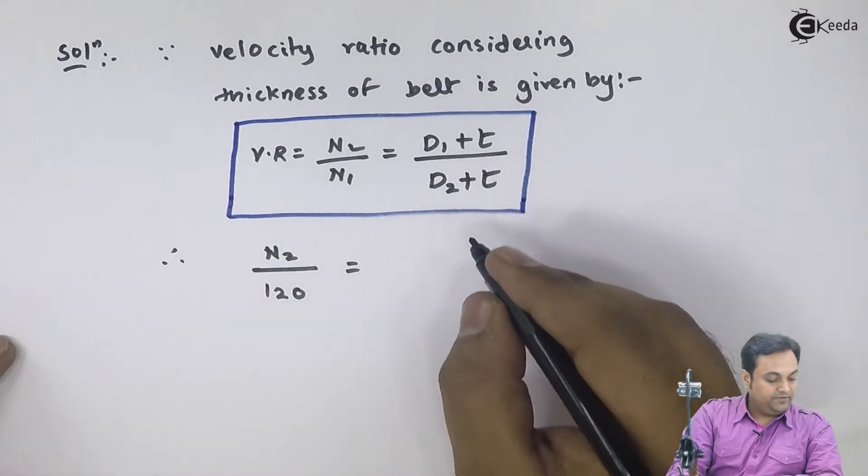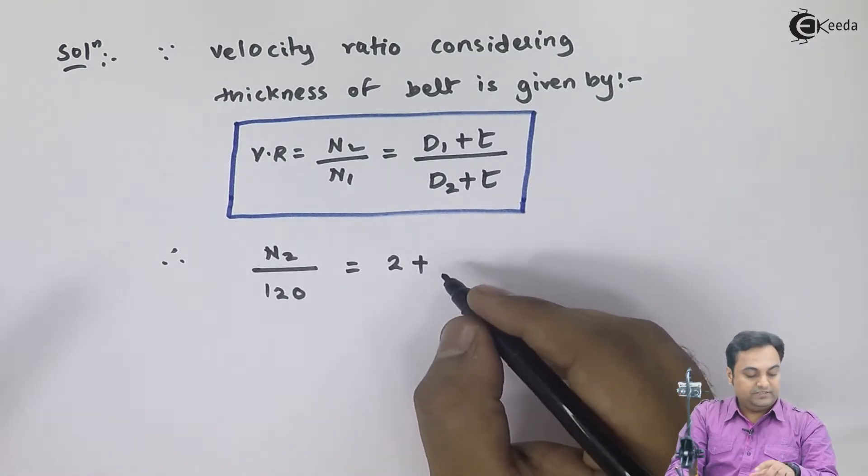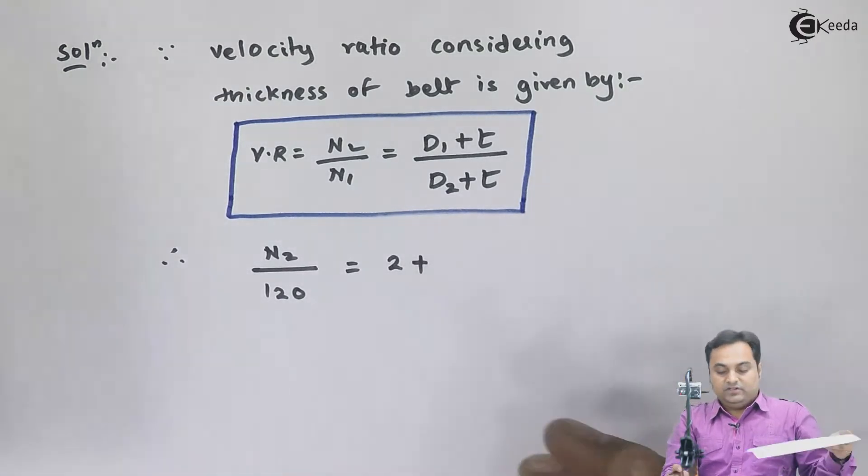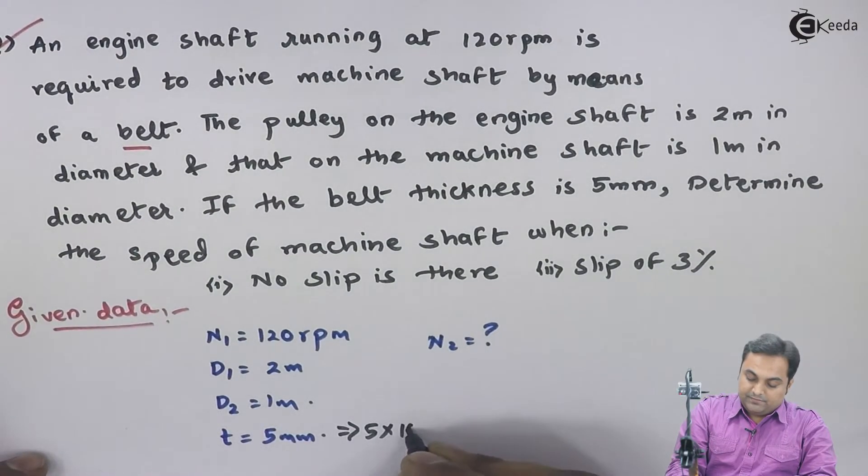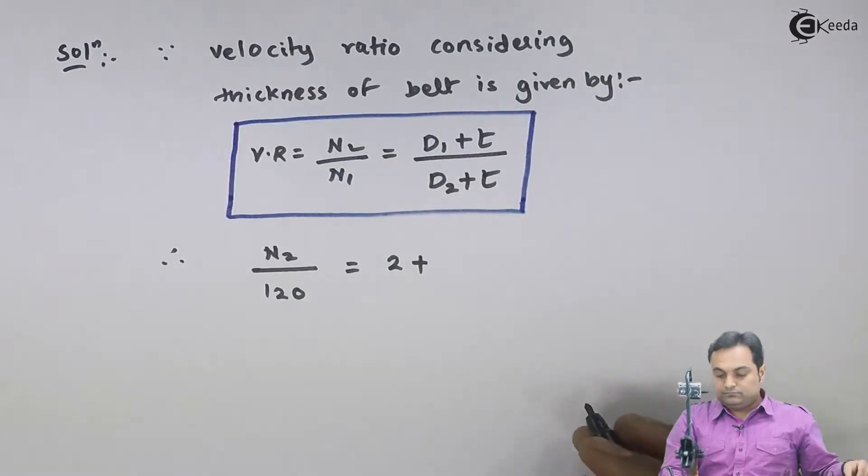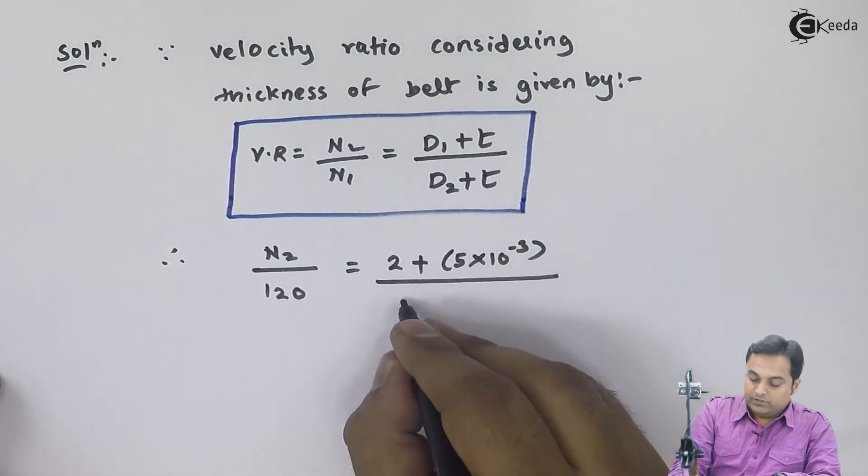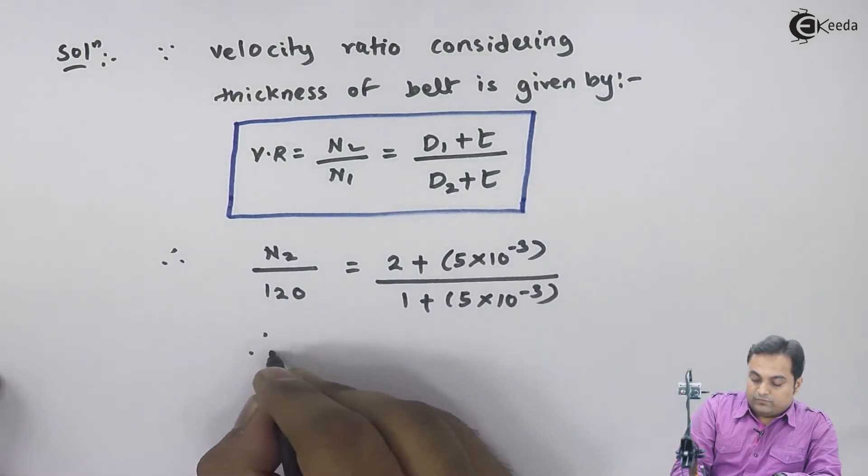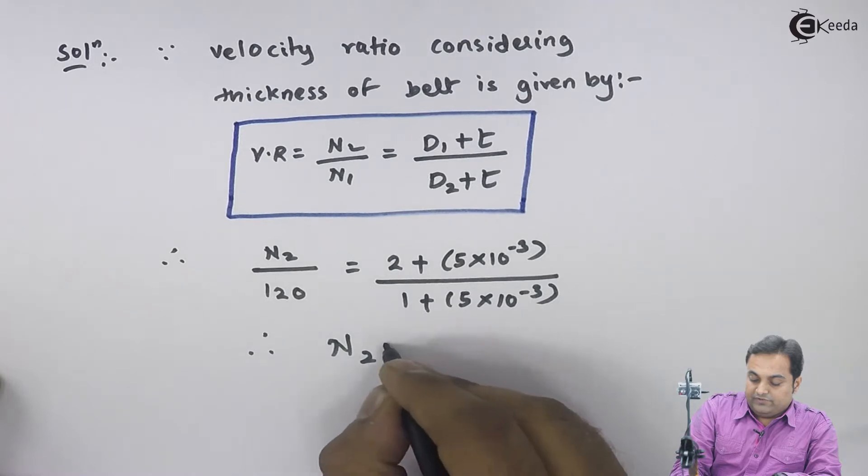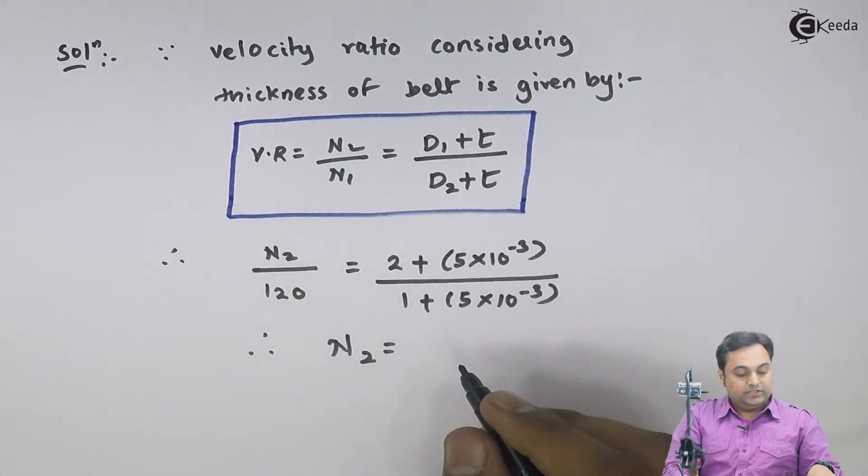In terms of mm, I will convert it into meter so it becomes 5 into 10 raised to minus 3 meter. So from this I will get the value of n2 that comes out to be 239 rpm.